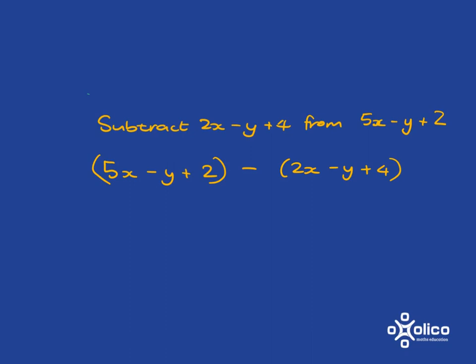And you then very, very carefully emphasize the fact that you've got a subtraction. Because the important thing is, it's the whole of this, this 2x - y + 4, that you are subtracting from that. So this subtraction applies to everything inside that bracket. And that's important, and it's very easy to forget that.